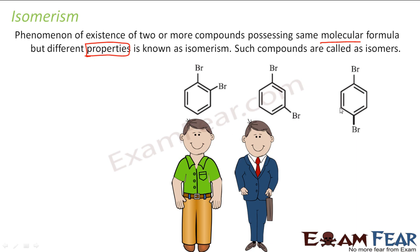For example, if you see these three, they all have a benzene ring with two bromines attached, but their names are different and their properties are also different. A very similar real-life example: a person at home and the same person in office behaves differently. When he is at home, he is pretty cool. When he is in office, he wears a different dress and speaks in a different tone — maybe English instead of his local language.